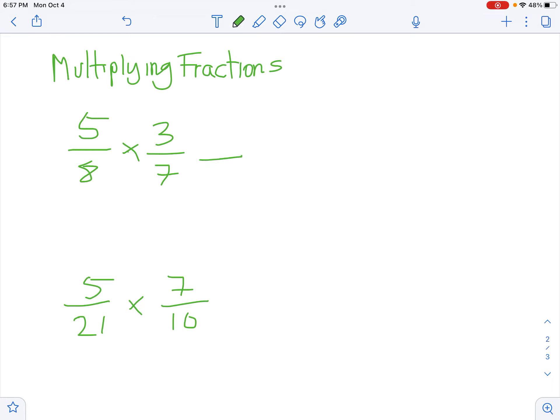That's where the 8 times 7 comes from, and we're having 5 times 3 of that box. So 5 times 3 is 15, 8 times 7 is 56. There are no common factors, so 15/56 is our final answer.